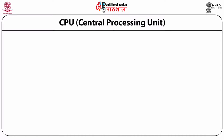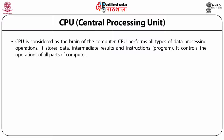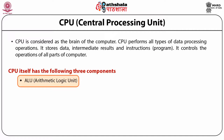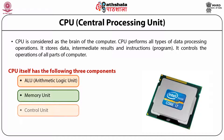The central processing unit, or CPU, is considered the brain of the computer. It performs all types of data processing operations, stores data, intermediate results and instructions, and controls the operations of all parts of the computer. The CPU has three components: the arithmetic logical unit, memory unit, and control unit.